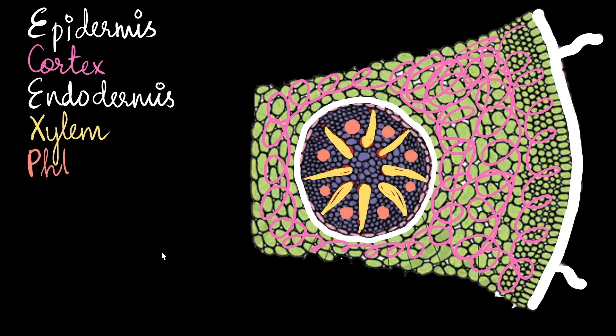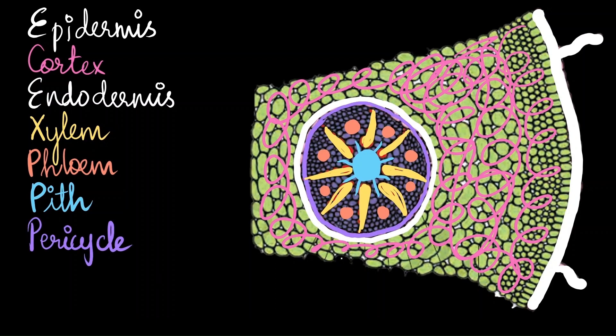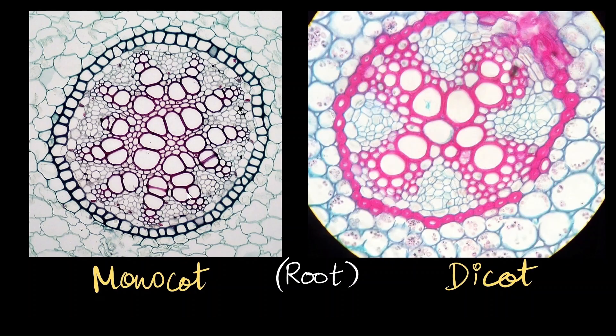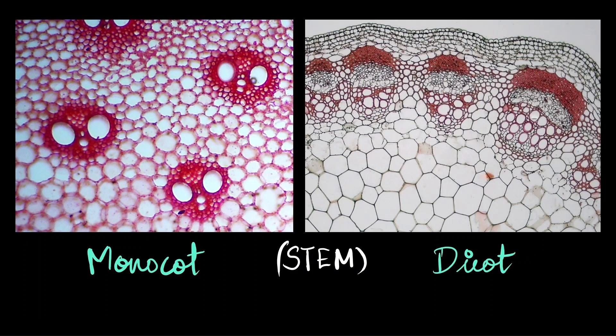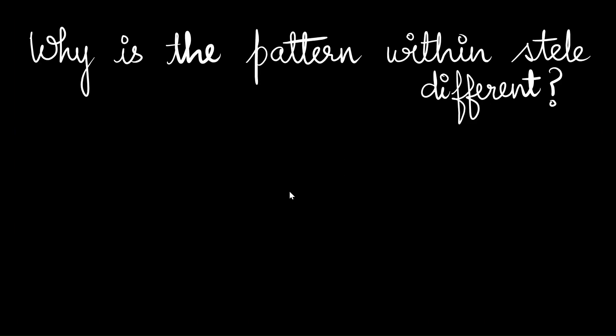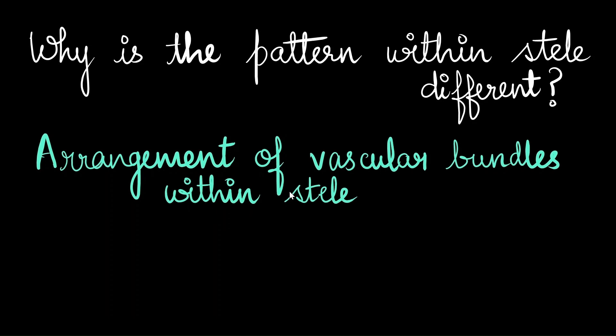So we have xylem and then the phloem in between, and we have one more filler tissue called as the pith, which is right at the center of the structure. And we also have one more layer of cells called as pericycle. Pericycle is involved in lateral root formation. All the structures within the endodermis together is termed as the stele. Now, the cross-sections across plants, whether it is the root of a monocot or a dicot or the stem of a monocot or a dicot, you don't see the same pattern that gets repeated. They're all very different. Why is the pattern within the stele different? The answer is quite simple. It is because of the difference in arrangement of the vascular bundles within the stele.